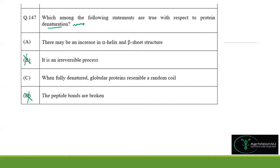Coming to option A again: there may be an increase in alpha helix and beta pleated structure, which is very much possible. The tertiary protein structure that is getting denatured may convert into secondary structure, and the secondary may convert to primary or may stay at the secondary level. Hence option A is correct — there may be an increase in alpha helix and beta pleated structure, which are secondary structures.